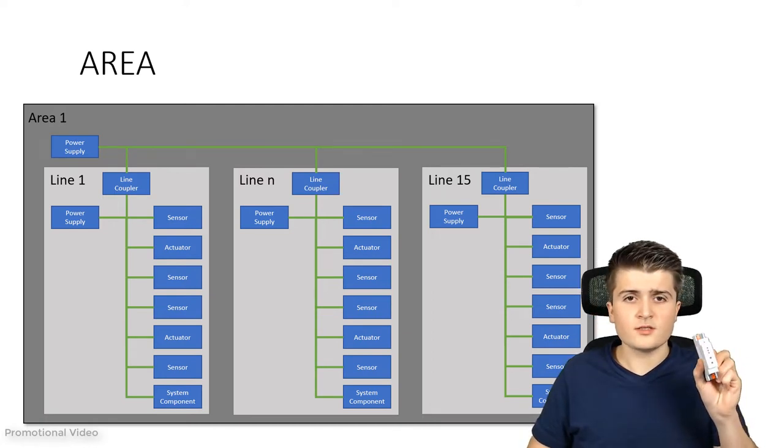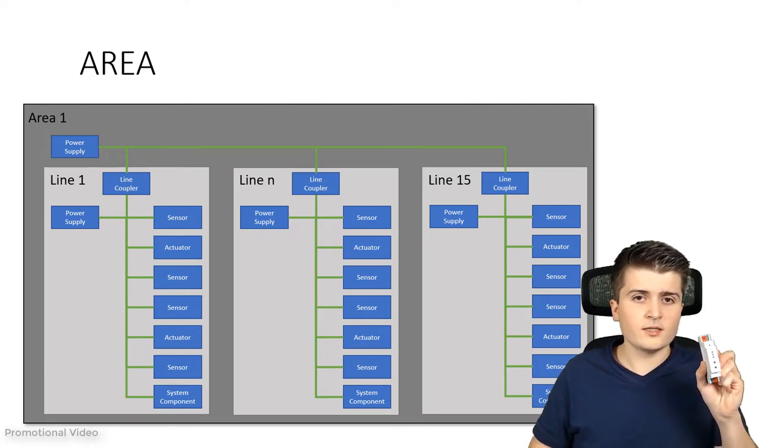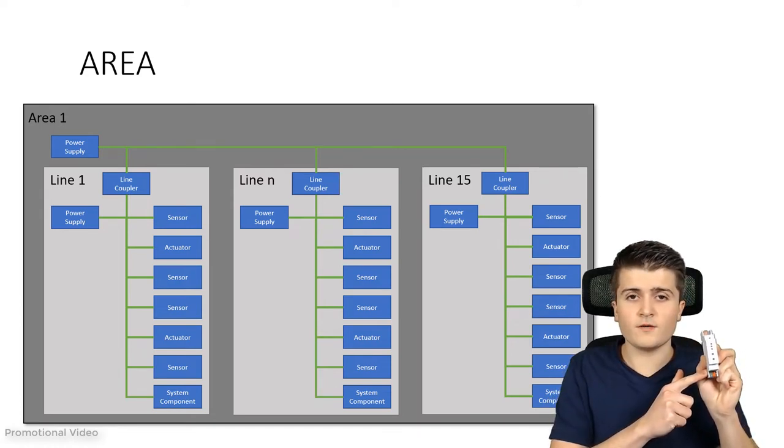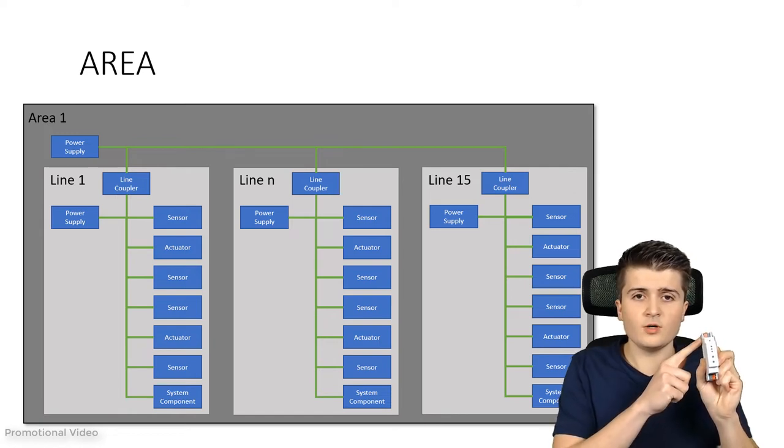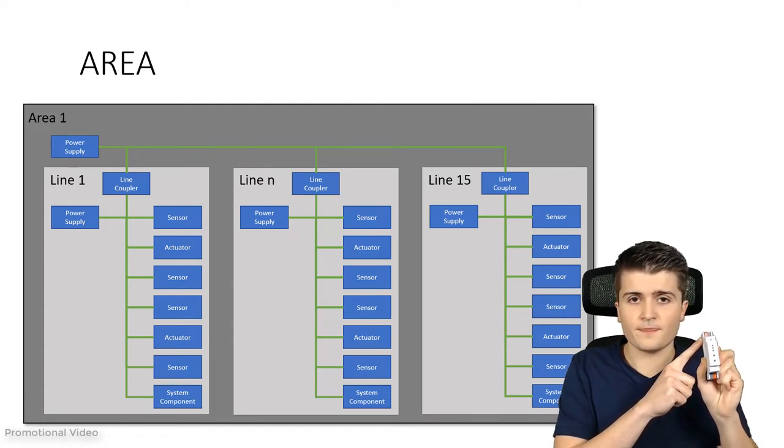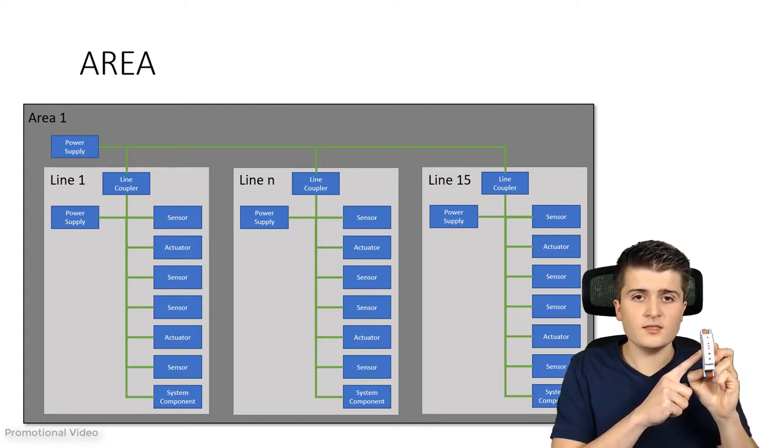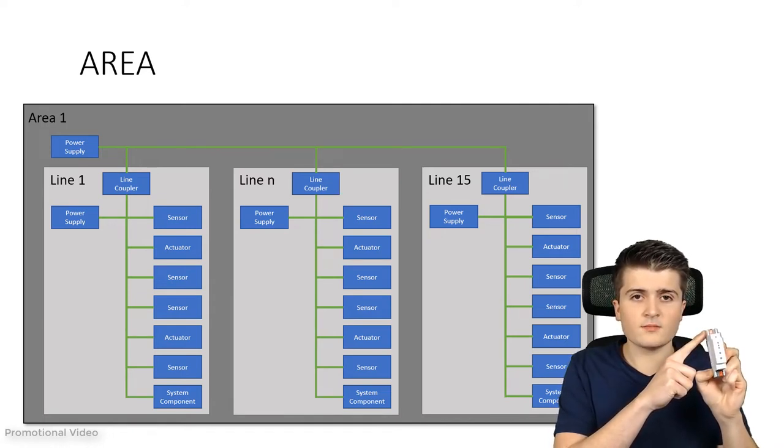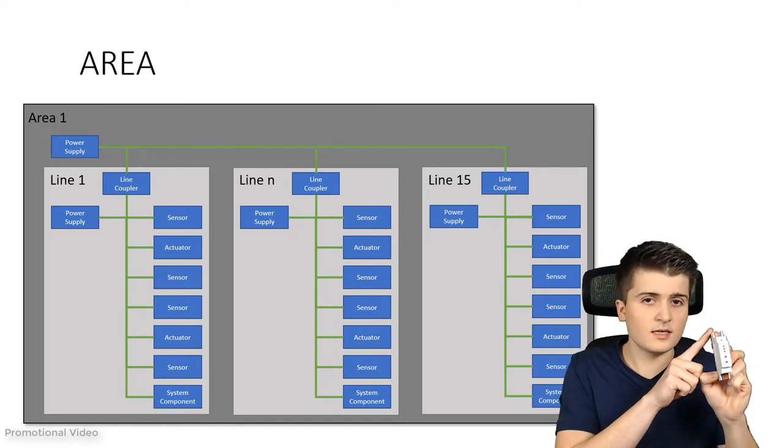Then you simply use multiple lines, each with its own power supply where you connect your sensors and actuators to it, and up to 15 of such lines you can connect within an area. Well therefore you would use such a device like this one. This is a line coupler. This line coupler as you can see has two KNX clamps. One is for the line where you have your sensors and actuators and the other one, there you connect all the line couplers together so that each line is connected with each other. Now it is important that this device galvanically isolates this side from this side and therefore a separate power supply for the area is necessary.